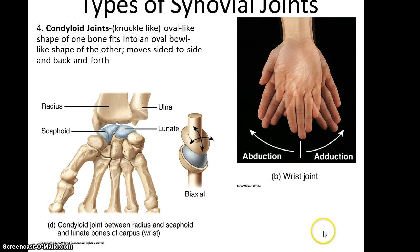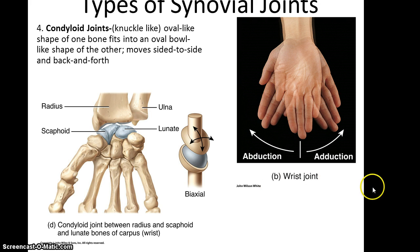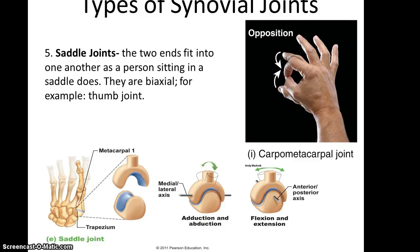Condyloid joints have a sort of ball-and-cup shape, where a cup-shaped bone fits onto a ball-shaped bone. A good example is the radius with the scaphoid, or the ulna with the lunate. This allows for side-to-side and back-and-forth motions — for example, you can do abduction and adduction with your hand. Saddle joints are where one bone is shaped like a saddle and the other fits like a rider's legs, allowing for biaxial motion. A very good example is the thumb joint — specifically metacarpal one moving against the trapezium bone in the wrist — which allows for opposition movement of the thumb, enabling us to grasp things easily.